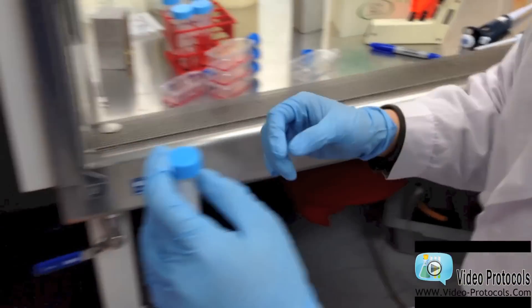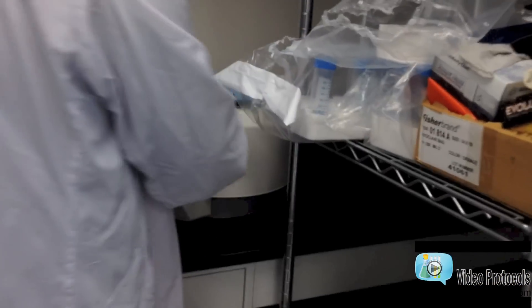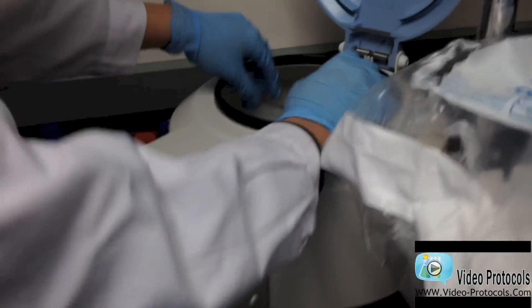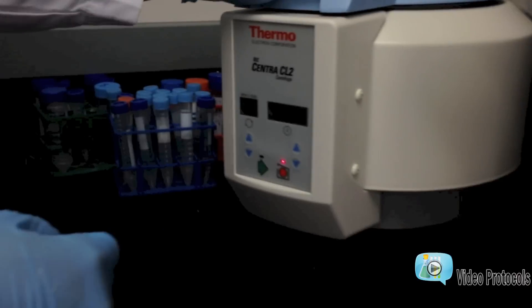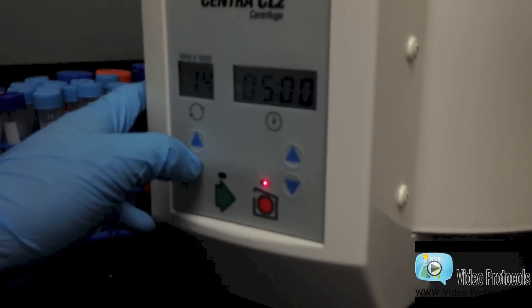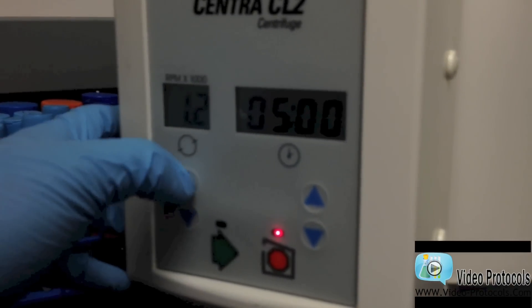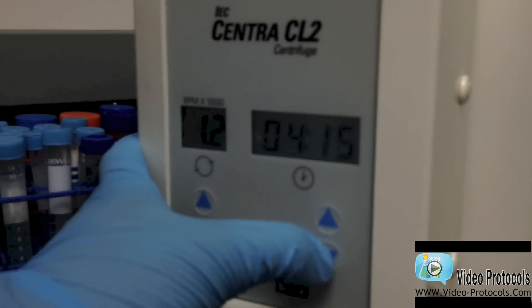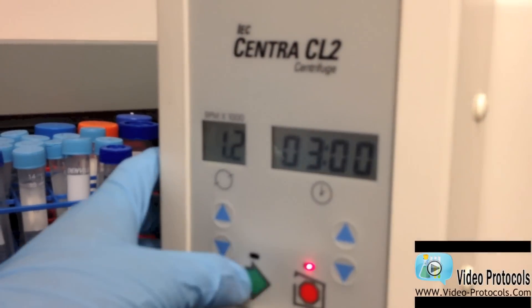I will spin down or centrifuge the tube to get a cell pellet. This is 400 g for 3 minutes.